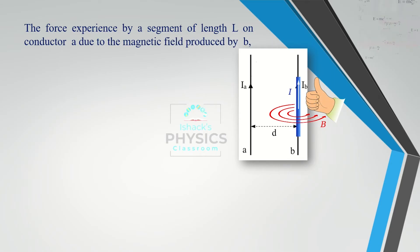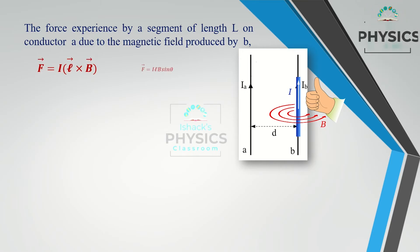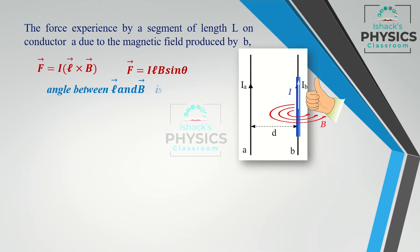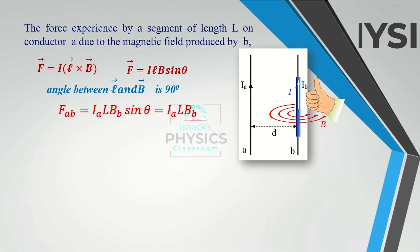Similarly, for the force experienced by a segment of length L on conductor A due to the magnetic field produced by B: this current-carrying conductor experiences force due to the magnetic field of B. Using F = I(L × B), the vector product gives LB sinθ, and since L and B make an angle of 90°, sin 90° = 1.